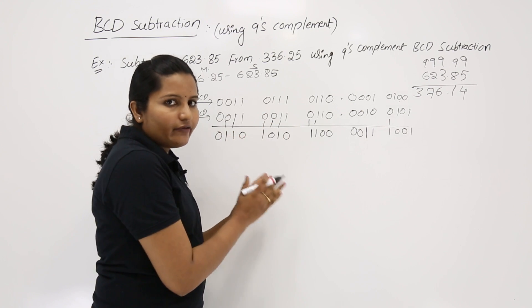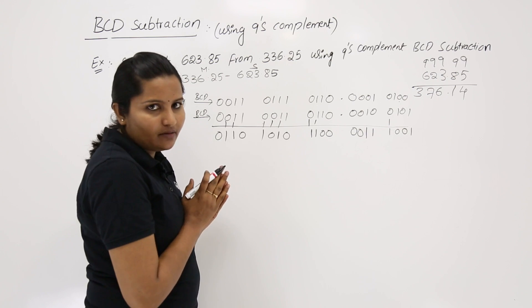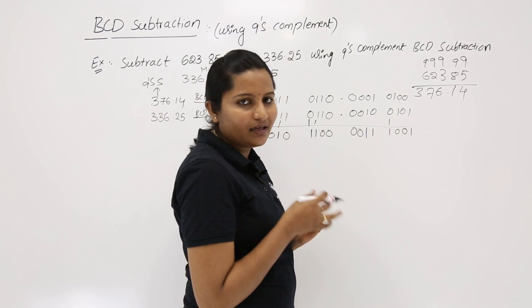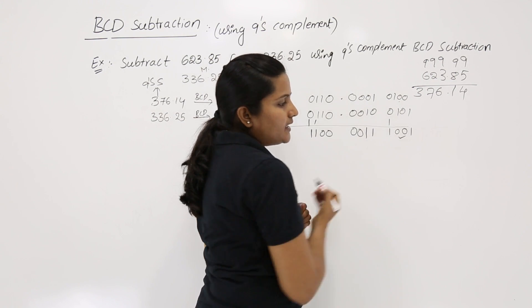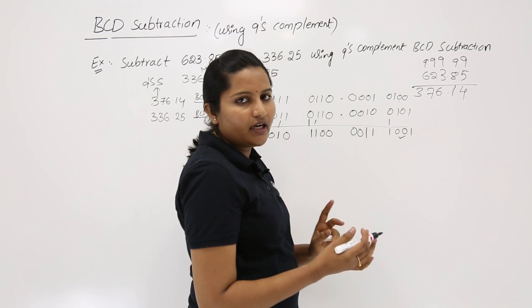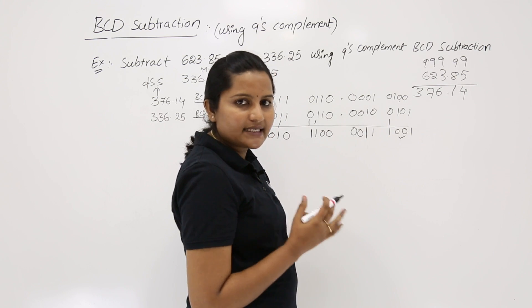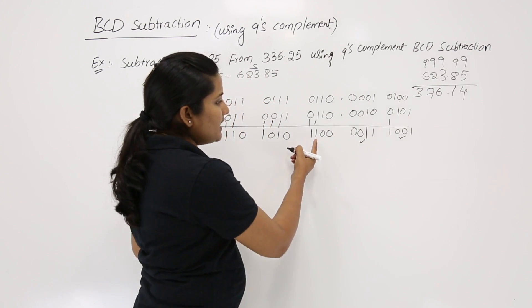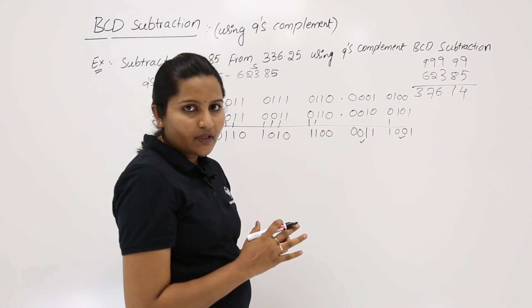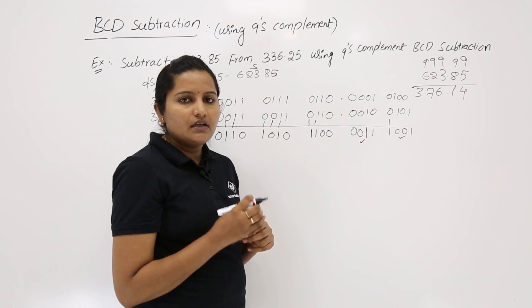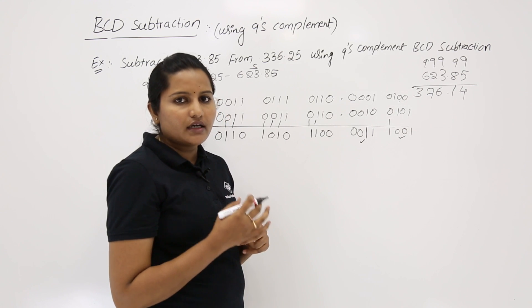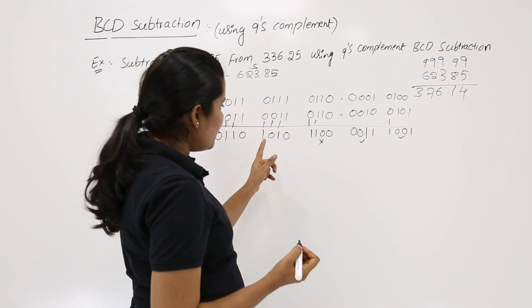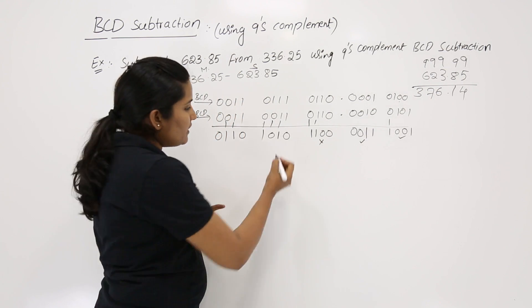After BCD addition of the subtrahend complement and minuend, we check the result for invalid BCD. This digit is 9, which is valid (9 or below is acceptable). This digit is 3, also valid. But this digit is 12 — whenever a digit result is greater than 9, it is invalid BCD. This digit group is also invalid BCD.